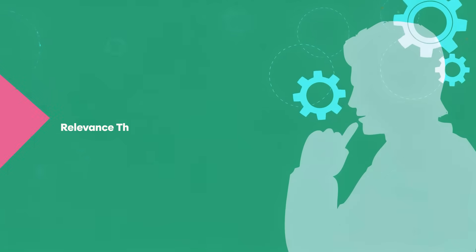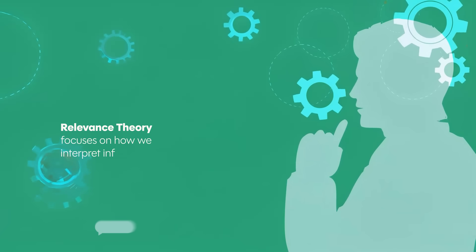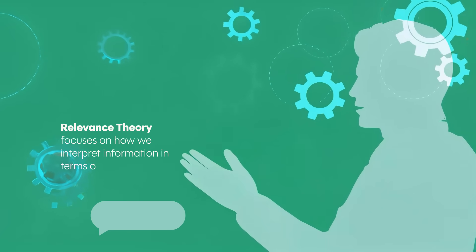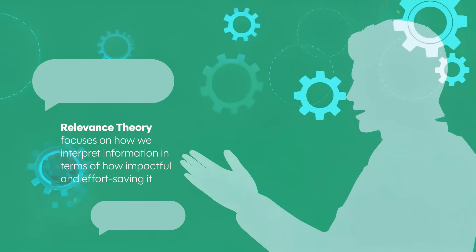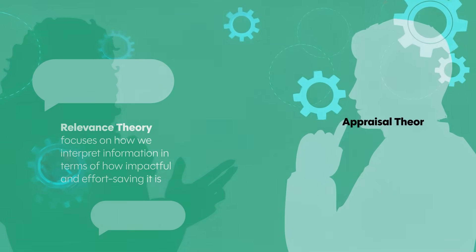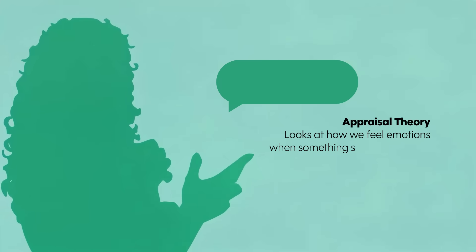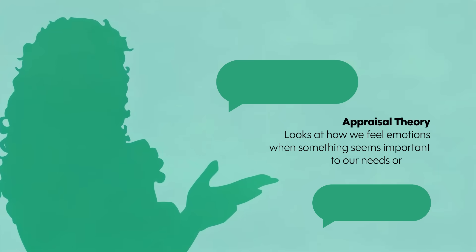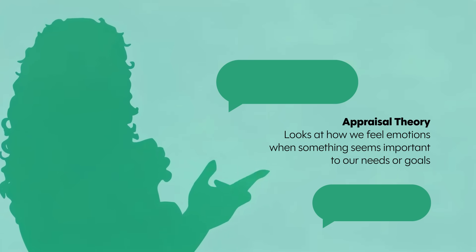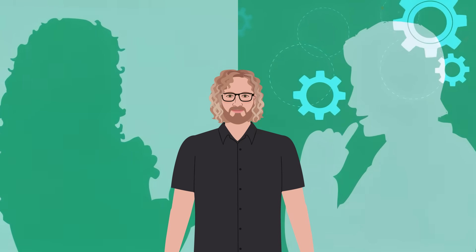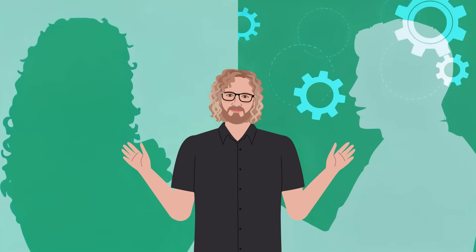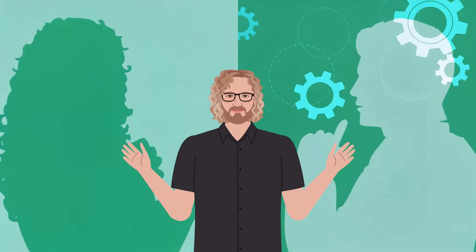Relevance theory focuses on how we interpret information in terms of how impactful and effort-saving it is. Appraisal theory looks at how we feel emotions when something seems important to our needs or goals. Dr. Wharton's project sets out to build a bridge between the two theories, creating a clearer picture of how we both feel and communicate emotions.